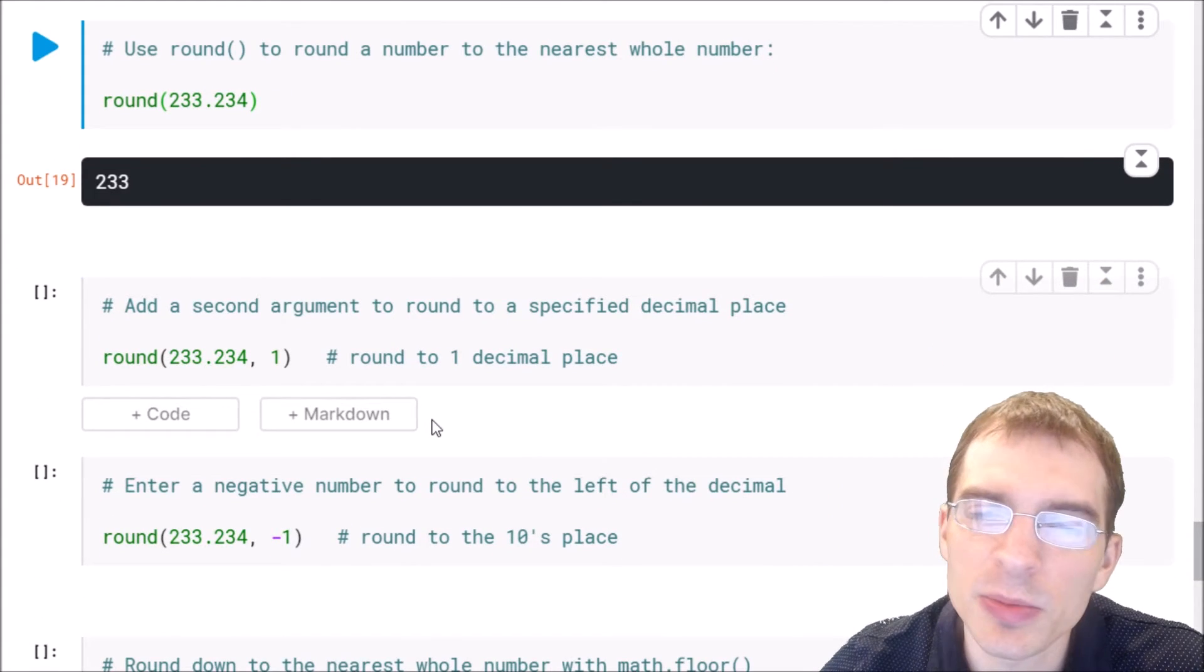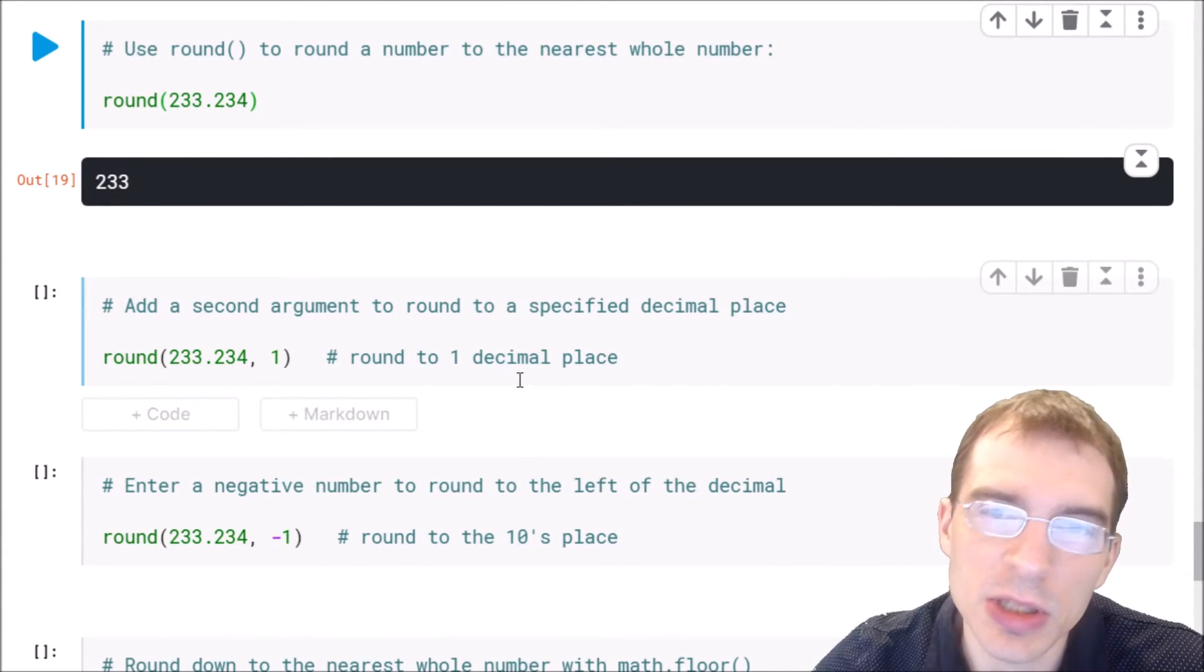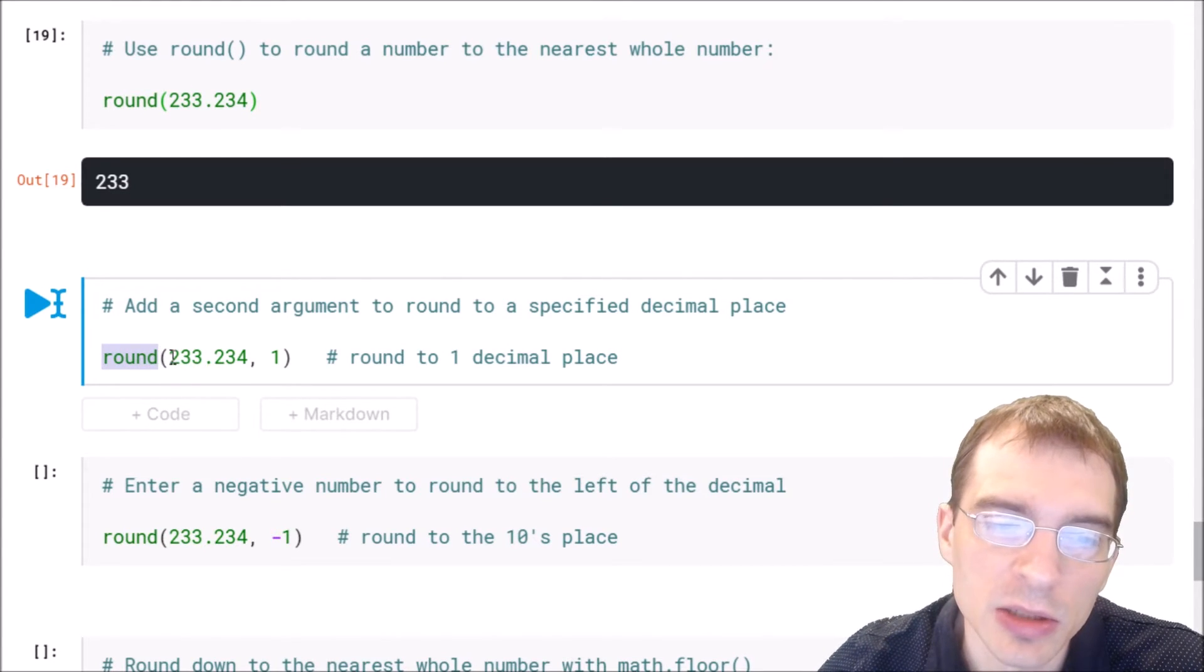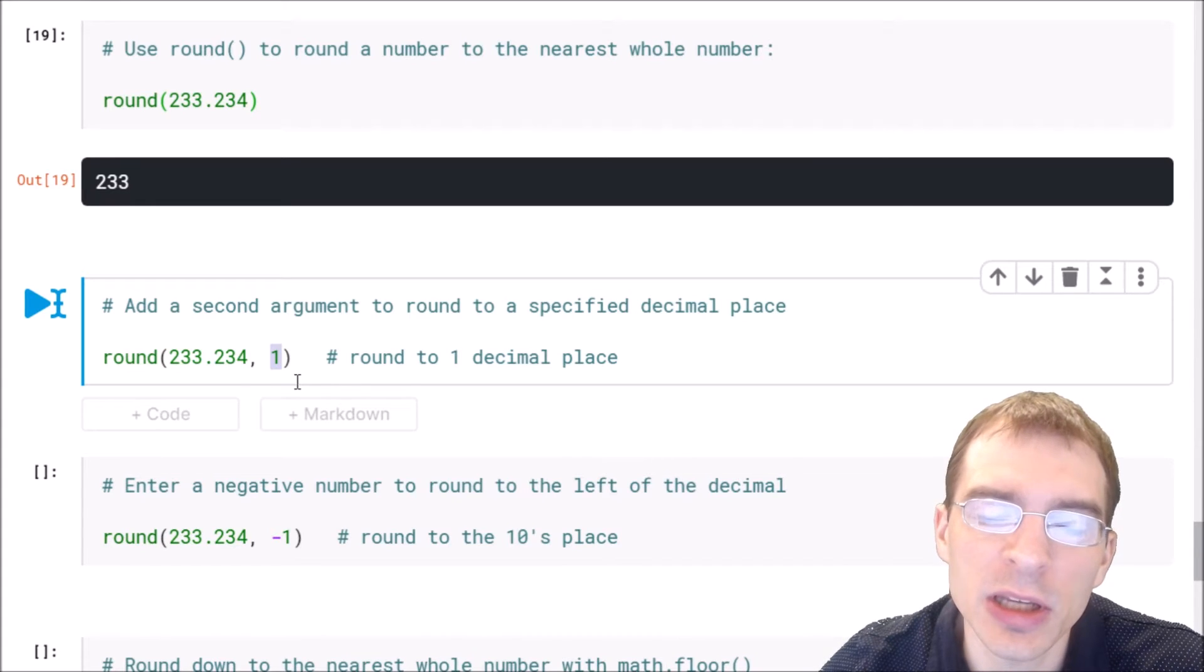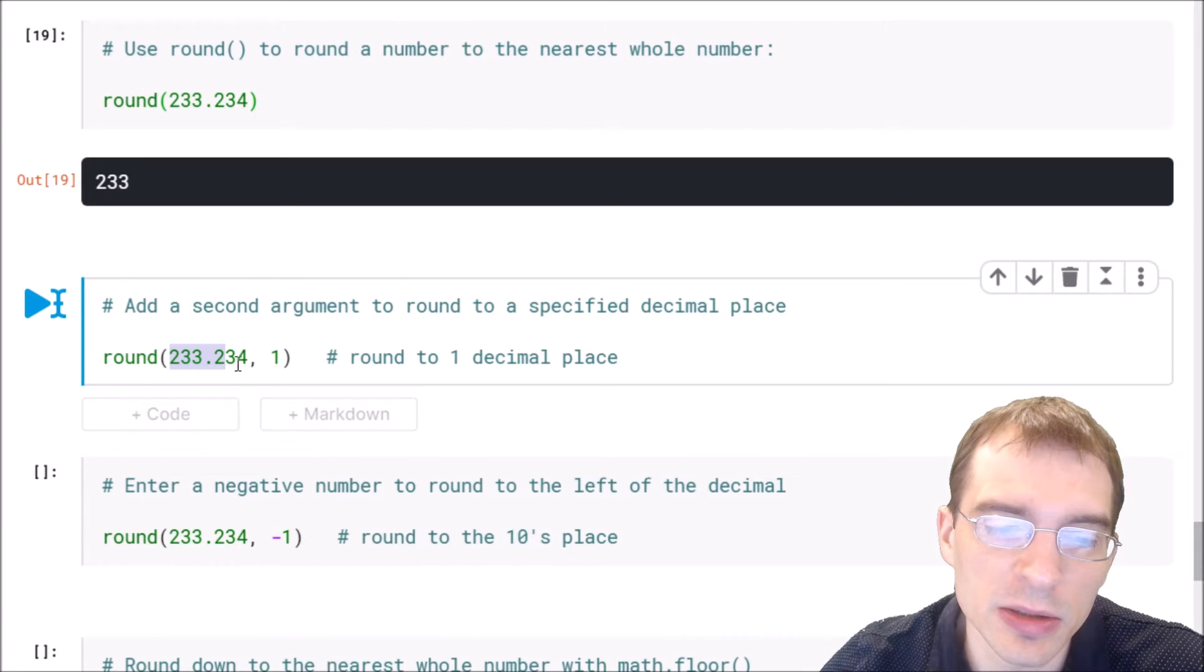If you want to keep a certain amount of decimals, you can specify that with an extra argument. Here we're going to round again on the same number, but then we say comma and our next argument is 1. That means we're going to round but keep one thing after the decimal point. So we have 233.2 after this.